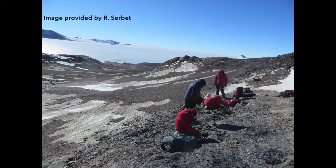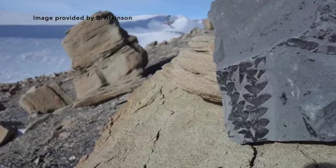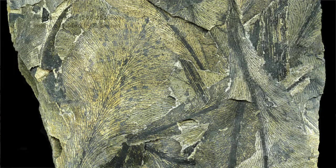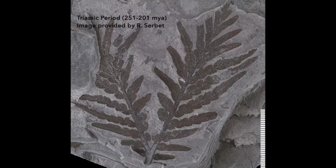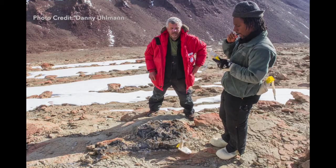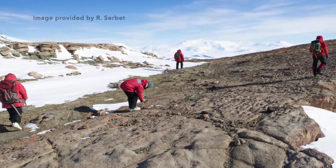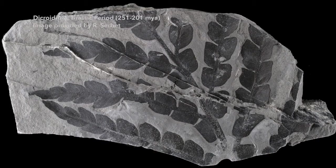The majority of our collection is from Antarctica. These specimens range in age from the Permian up into the Jurassic. We've collected from a number of sites in Antarctica and from each of these sites we've collected a variety of different types of leaves, like these Dichoridium, which are Triassic in age.